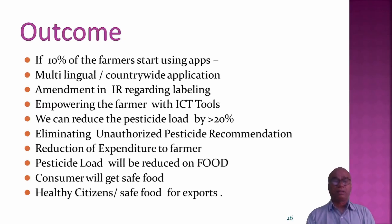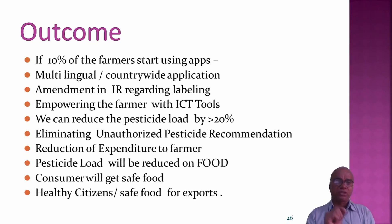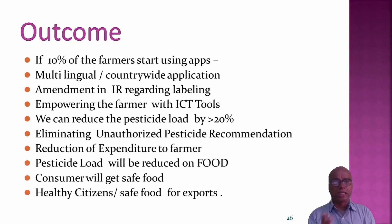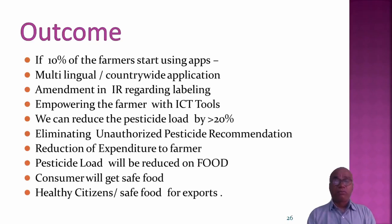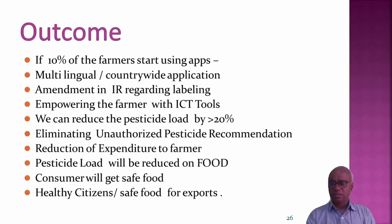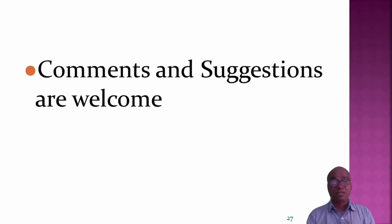We need to do something for the farmers. The outcome of talking pesticide: if 10 percent of farmers start using this app, we can reduce the pesticide load in food by 20 percent. We need to use multilingual pan-India software — a multilingual controlled application. We can reduce exposure for farmers, reduce the pesticide load in food. Farmers will get safe food, consumers will also get safe food, and we can achieve healthy citizens. You can offer your comments and suggestions. Thank you.